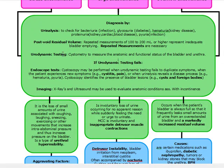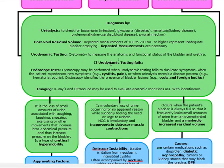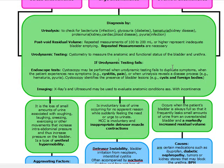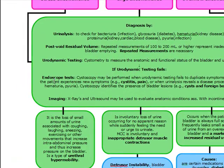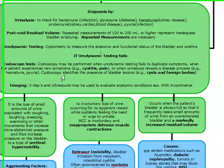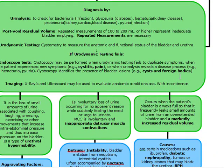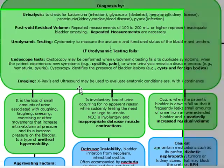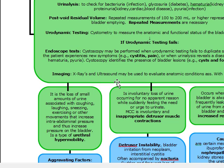We can also do urodynamic testing such as cystometry. Cystometry measures the anatomic and functional status of the bladder and the urethra. If cystometry fails, that's when we go to endoscopic tests such as cystoscopy. We also go to cystoscopy if we have incontinence plus new symptoms such as cystitis and pain. Cystoscopy identifies bladder lesions such as cysts and foreign bodies. Imaging — x-rays and ultrasounds — evaluate anatomic conditions associated with incontinence.